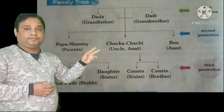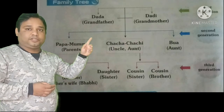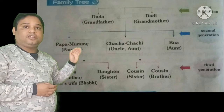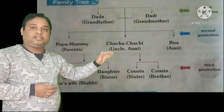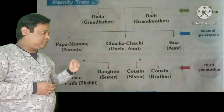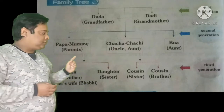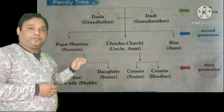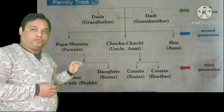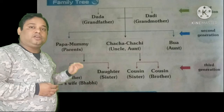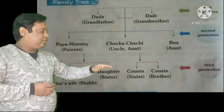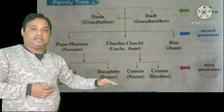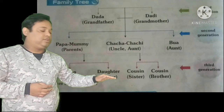To recap: the first generation is grandparents. The second generation is parents, uncle, and aunt. The third generation includes brother, sister, and cousins — the children.